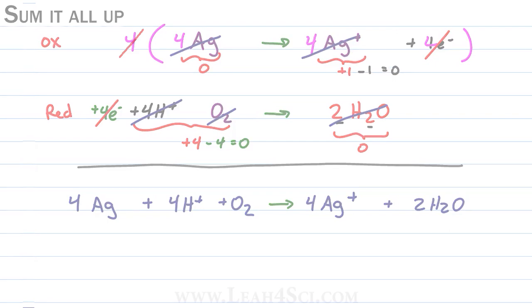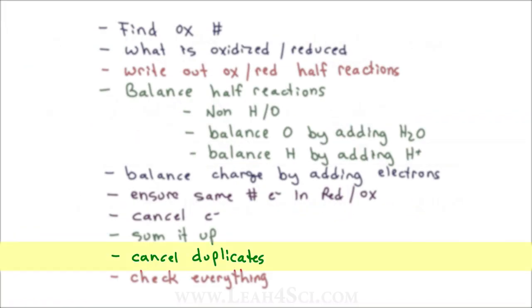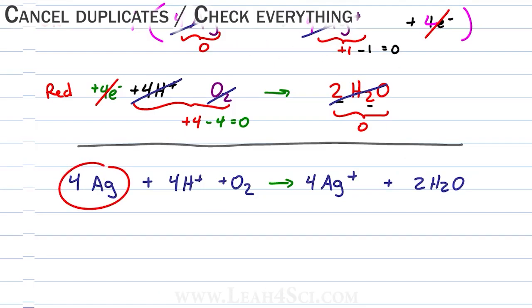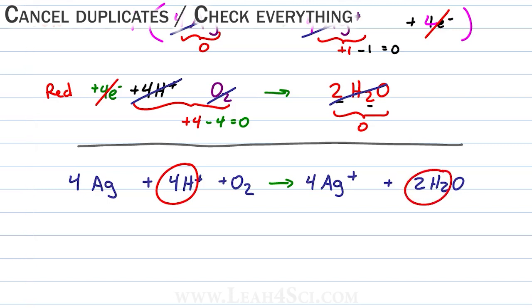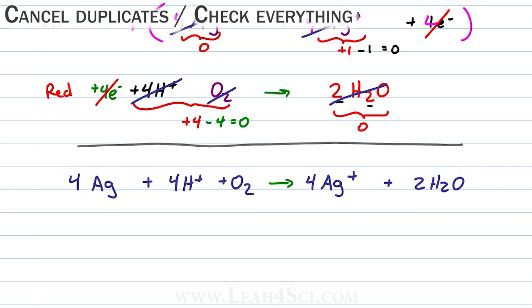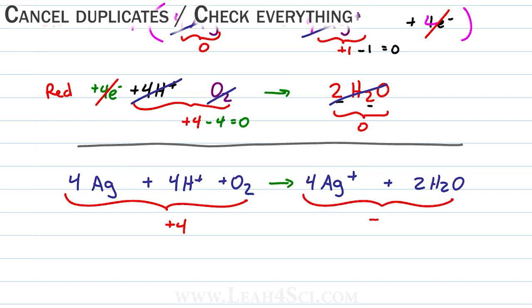It looks like we're done but we're not — we check for duplicates to cancel; we don't have any. Next we check all the atoms: four Ag equals four Ag; four hydrogens on the left and two times two is four hydrogens on the right; O2 is two oxygen and two H2O is two oxygen. Atoms are balanced. Next we check the charge: zero plus four plus zero gives plus four on the reactants; four times plus one plus zero gives plus four on the products. We're good to go. Adding phases back: four Ag solid plus four H+ plus O2 gas gives four Ag+ plus two H2O liquid.